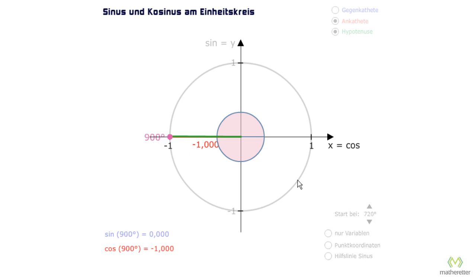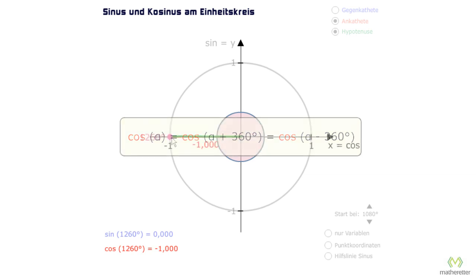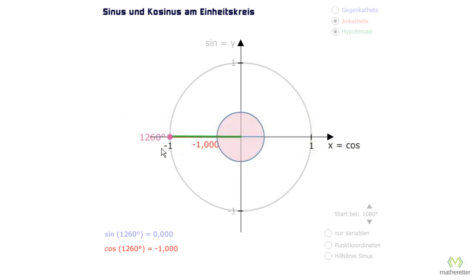Or 900 degrees or 1260 degrees. So we can say, the sine of alpha is the same as the sine of alpha plus 360 degrees, which is the same as the sine of alpha minus 360 degrees. And the same for cosine: cosine of alpha is the same as cosine of alpha plus 360 degrees. Afterwards we will take a closer look at this when we talk about periodic functions and also with the so-called identities.